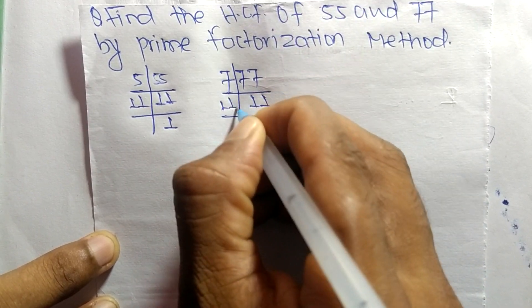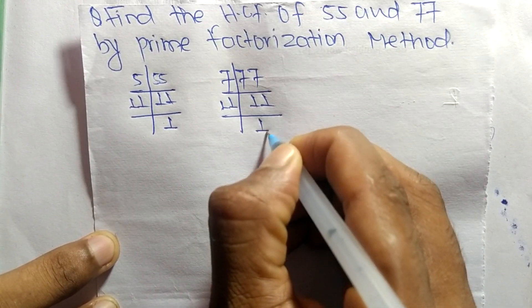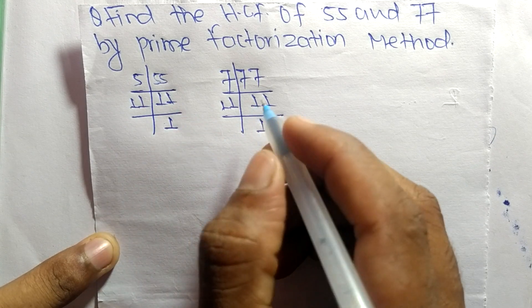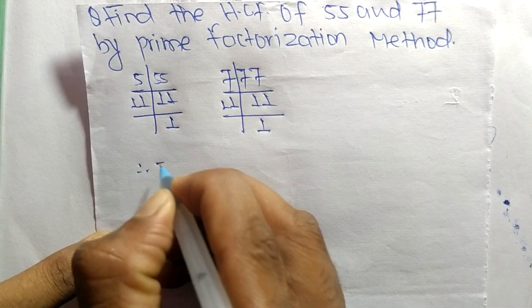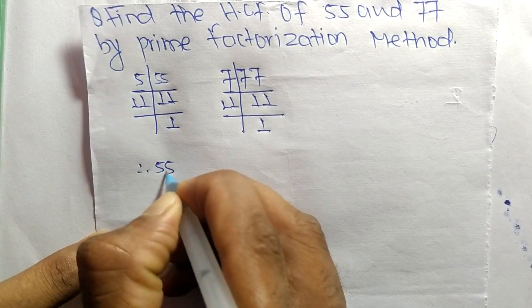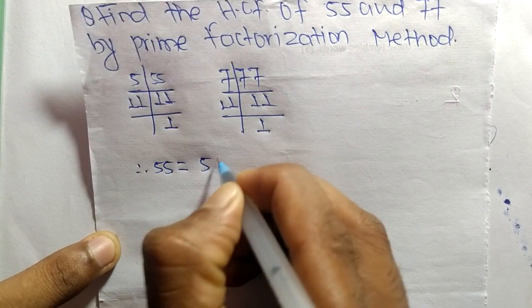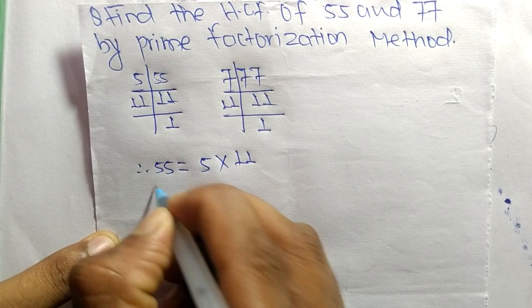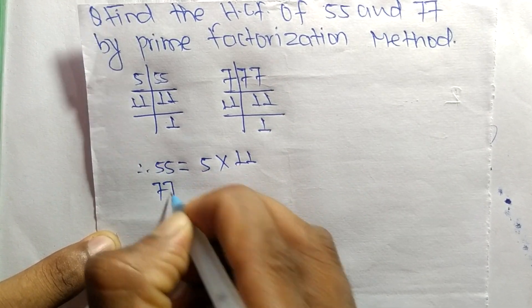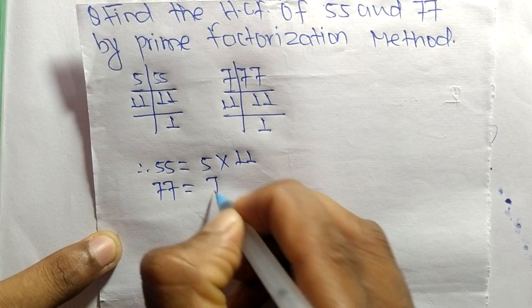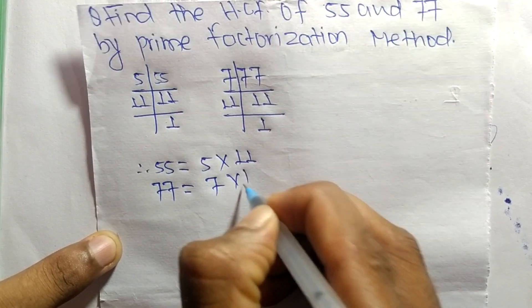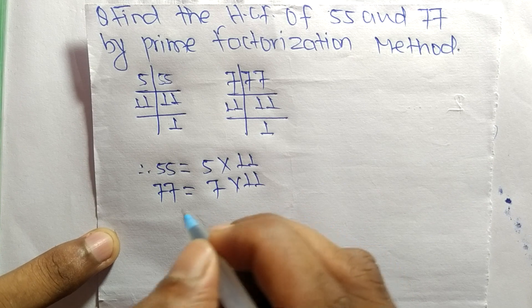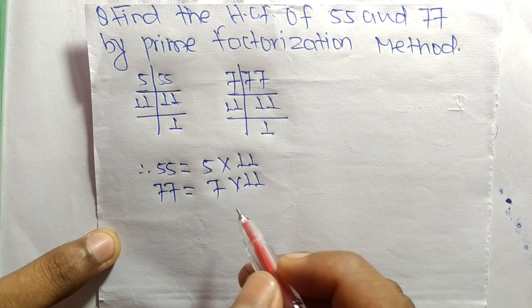And 11 times 1 equals 11. So from these prime factors we can write: 55 is equal to 5 times 11, and 77 is equal to 7 times 11. Now we select the common factors from these prime factorizations.